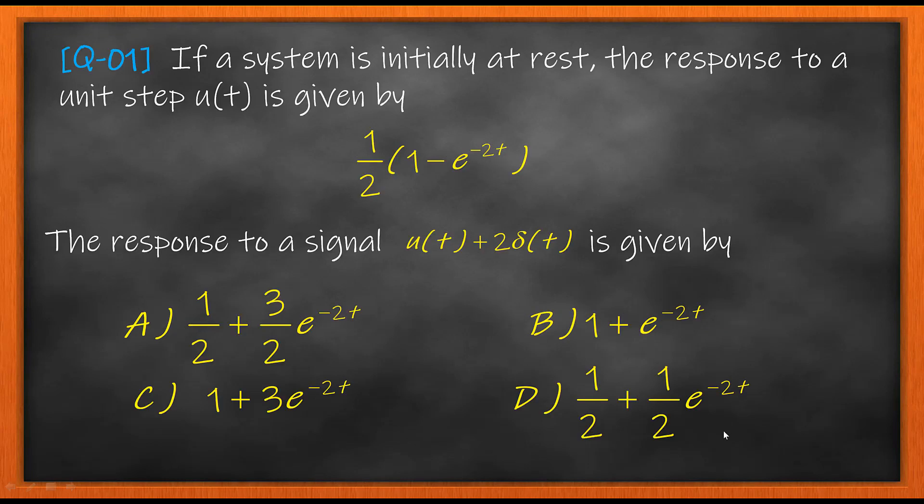For today's first question: if a system is initially at rest, the response to unit step u(t) is given by 1/2(1 - e^(-2t)). The response to a signal u(t) + 2δ(t) is given by: